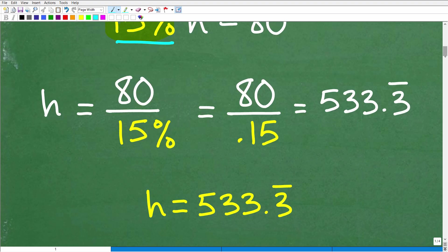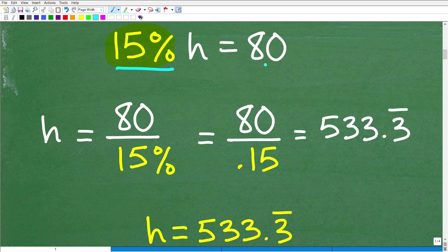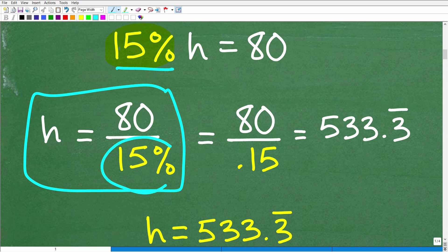Now, to solve for h, all I have to do is divide both sides of the equation by 15%. So 80 divided by 15% is going to be the solution. But I'm not done here. So at this point, to actually get the specific or the actual value, I'm going to have to go ahead and change that percent to a decimal.